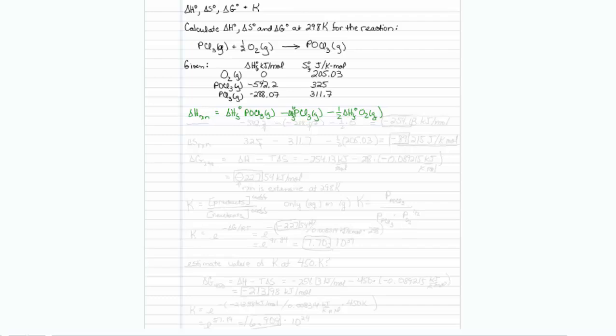So we have minus 542.2 minus a minus 288.07 minus one half times zero. Plugging that into our calculator, the value is minus 254.13 kilojoules per mole of reaction as written.